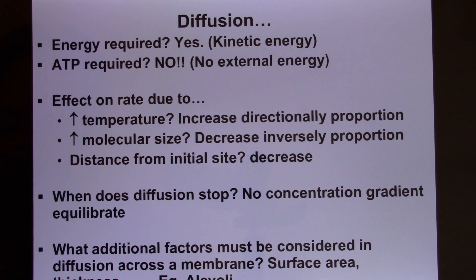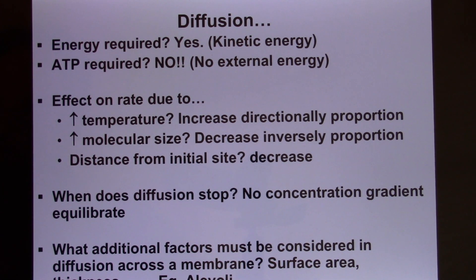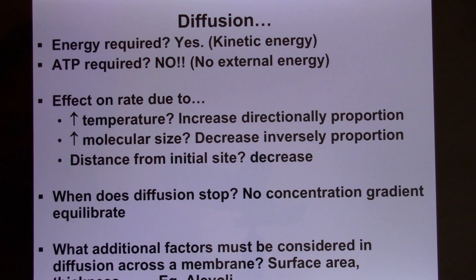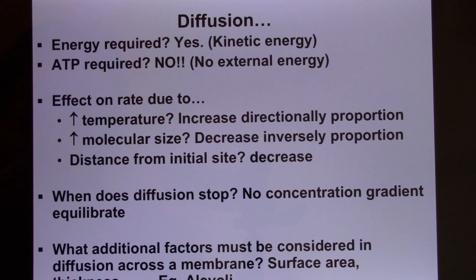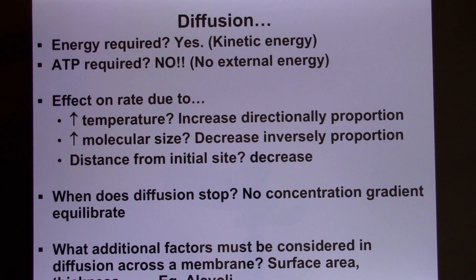What factors affect diffusion rate? Temperature — increasing temperature makes molecules move faster. Molecular size — smaller molecules move faster than bigger ones. Distance — diffusion works well for short distances. Like if your neighbor farts you smell it, but someone in New York suffers nothing because it's too far away. Diffusion works well for short distances, not long ones. Diffusion stops when there's no concentration gradient.